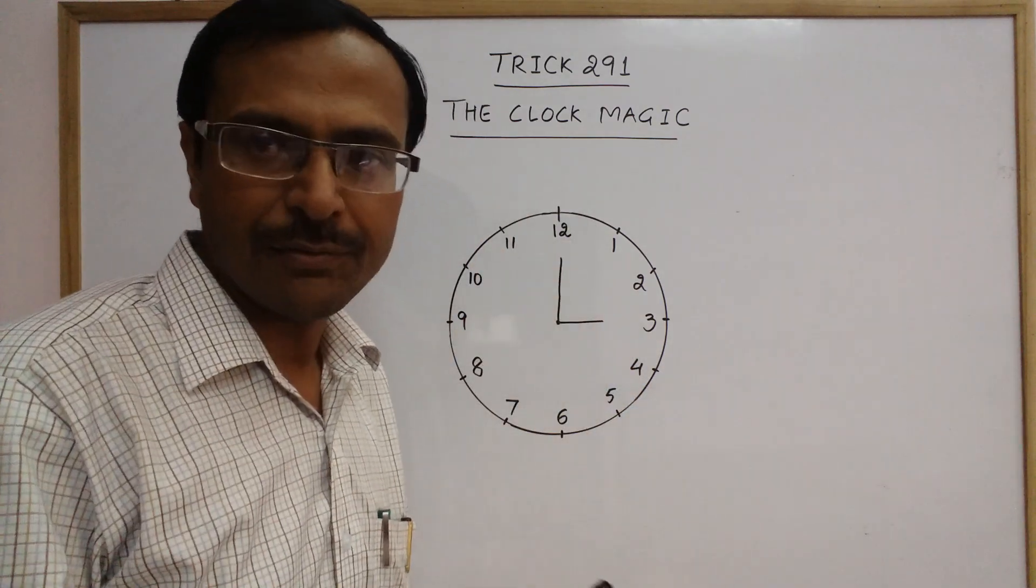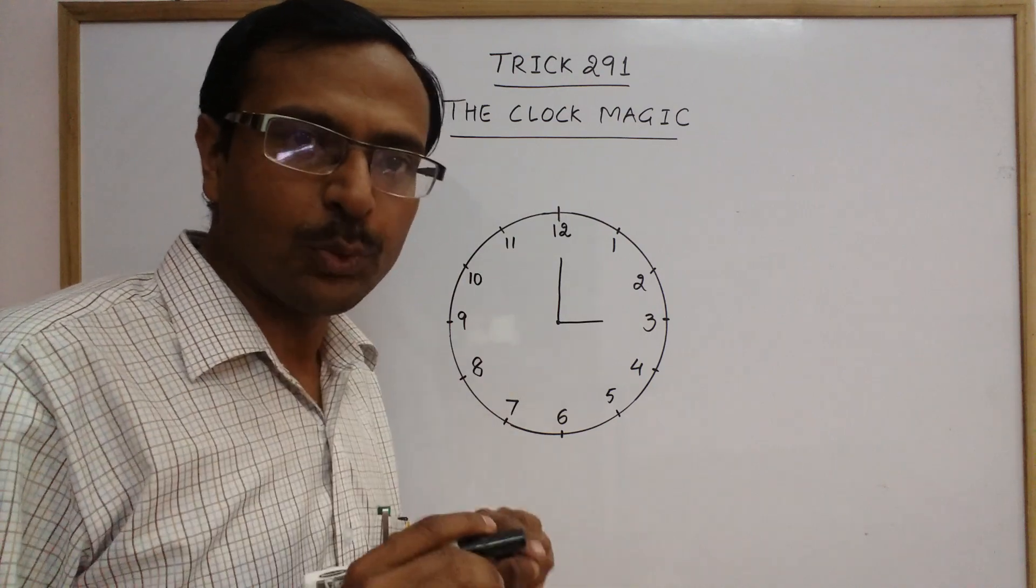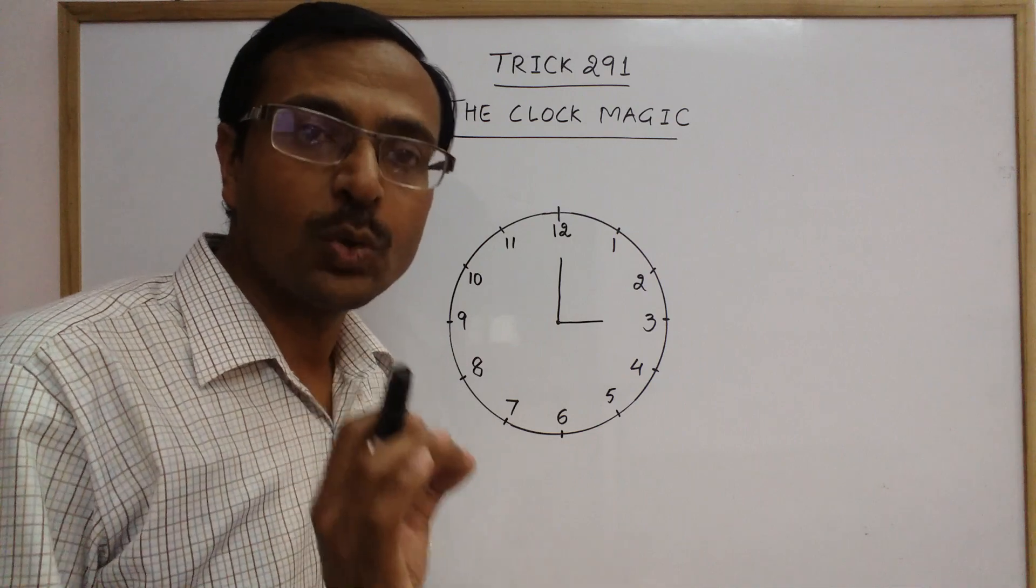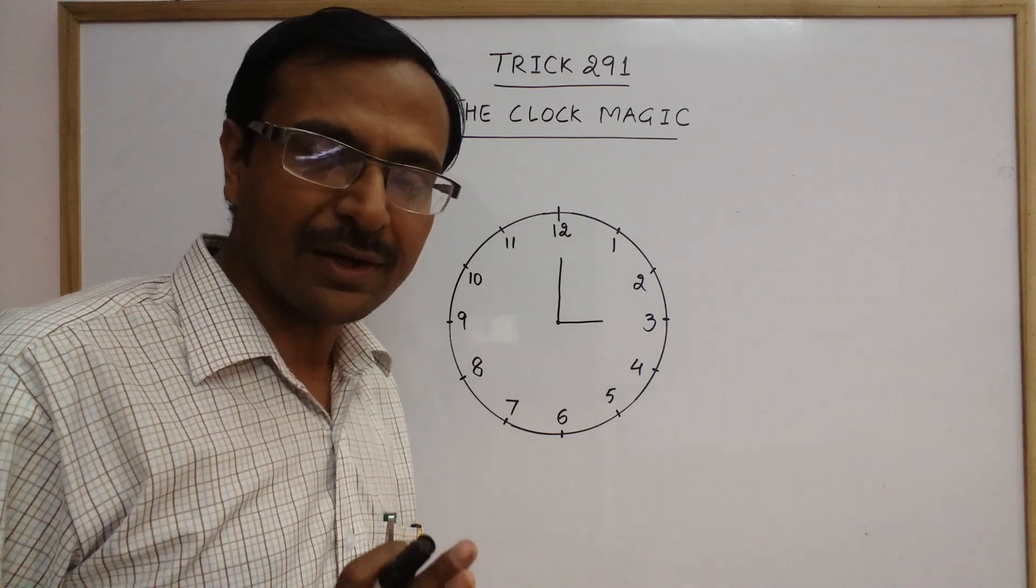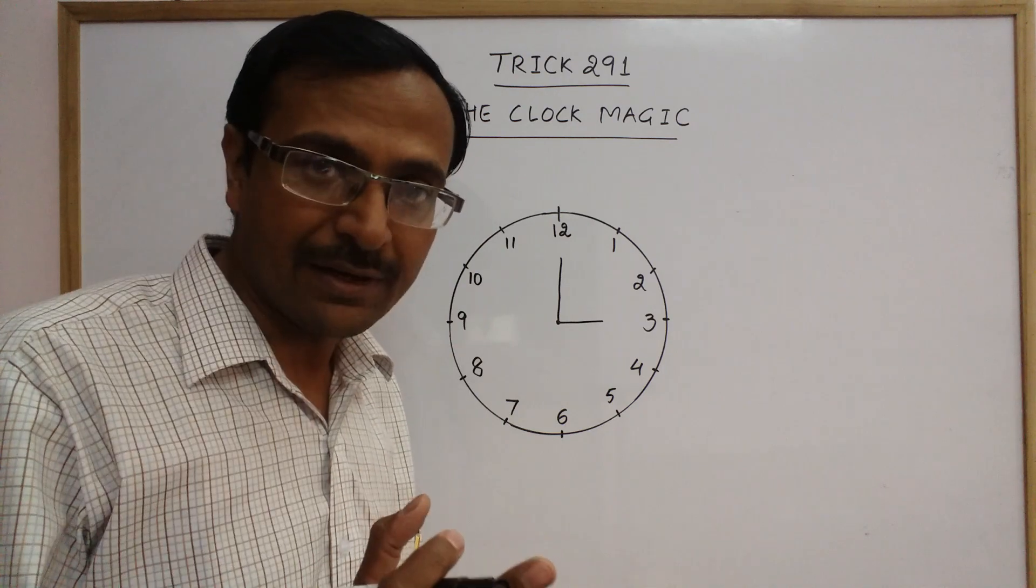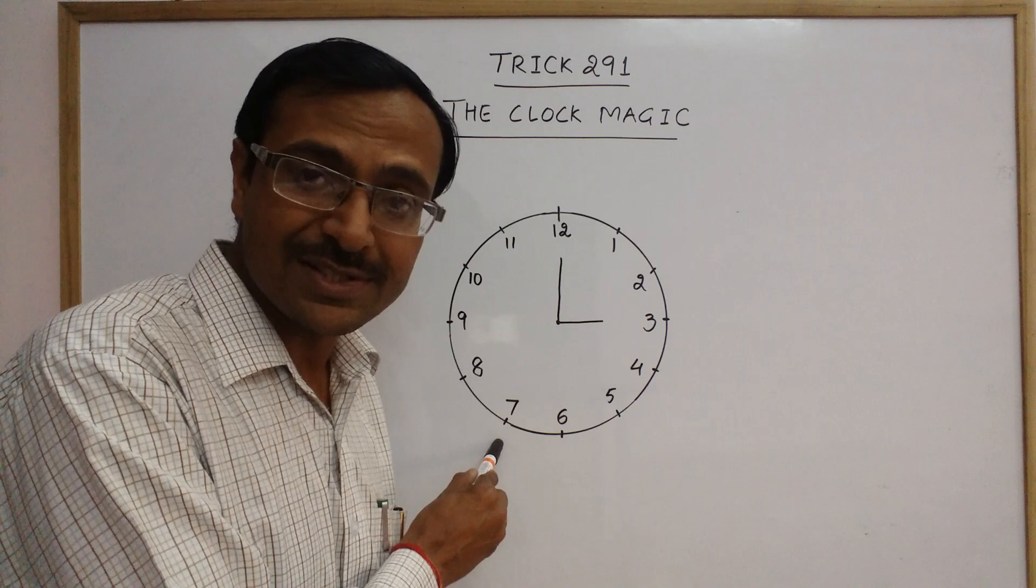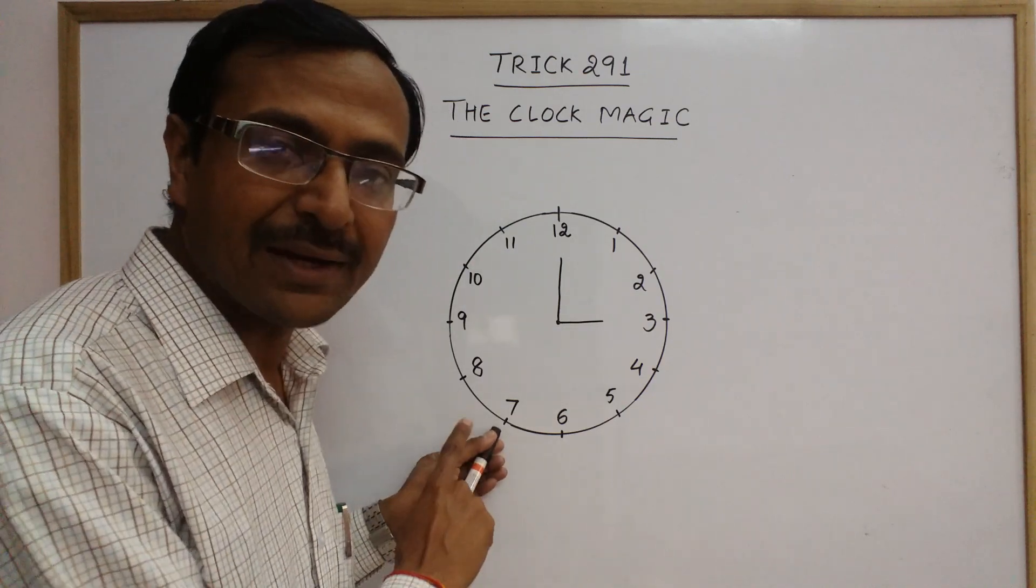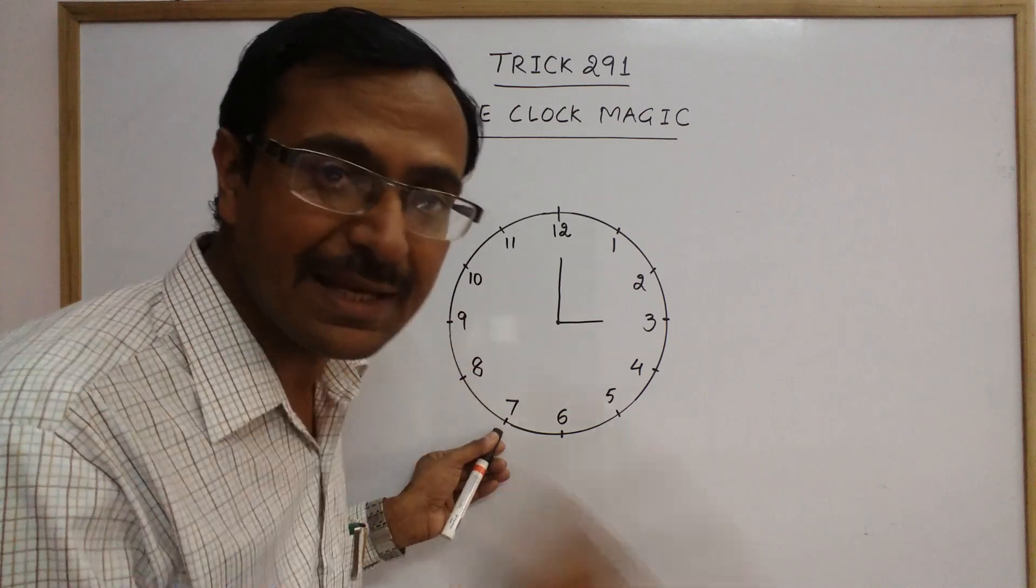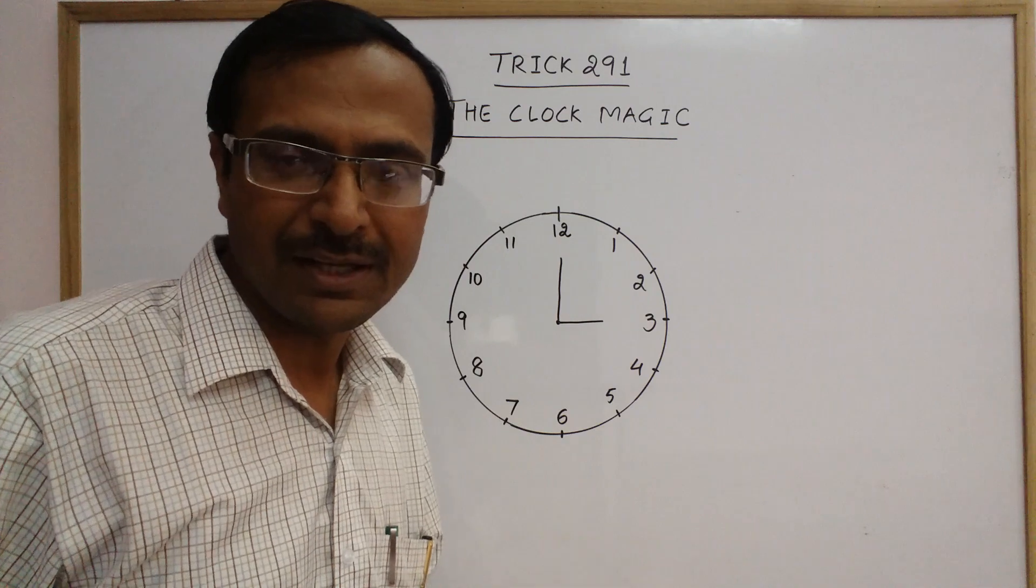Like this you keep on placing your pen at different numbers and he will keep on counting from that number. Ask him to stop you when he completes twenty in his mind. As soon as the counting reaches twenty in his mind, he will stop you, and to his surprise at that time you will be at that number which he has thought in his mind.